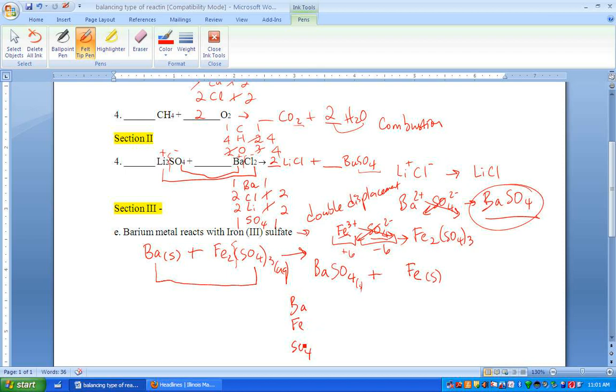So here you have barium, iron, and sulfate that you need to balance. Use the trick again or the method where you leave the sulfate or polyatomic ion as a group because they both appear on left and right side as a group. So if you balance sulfur that takes care of oxygen as well. So you have one barium, two iron, and three sulfate. One barium, one sulfate, and one iron on the right side. So we can start anywhere.